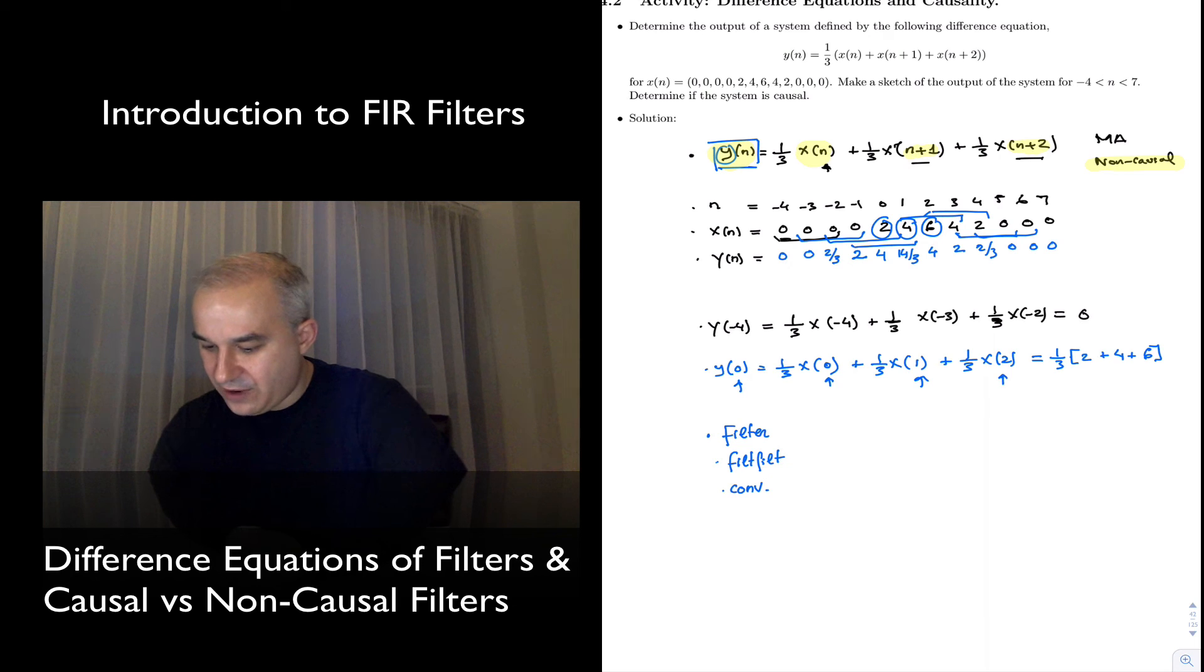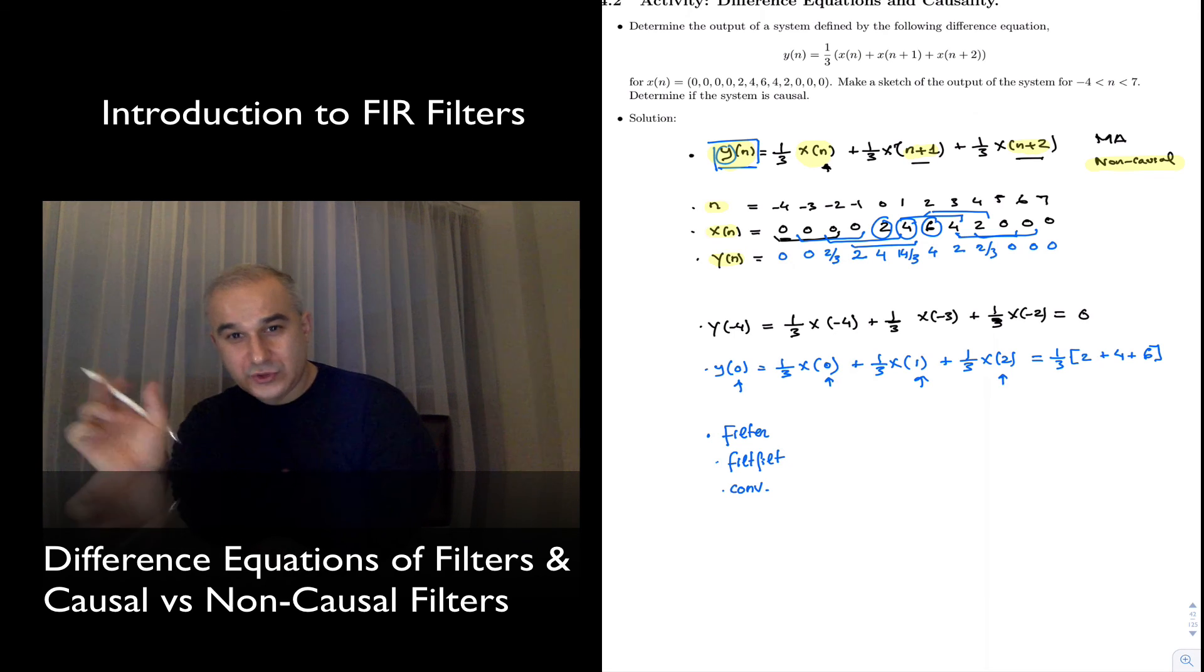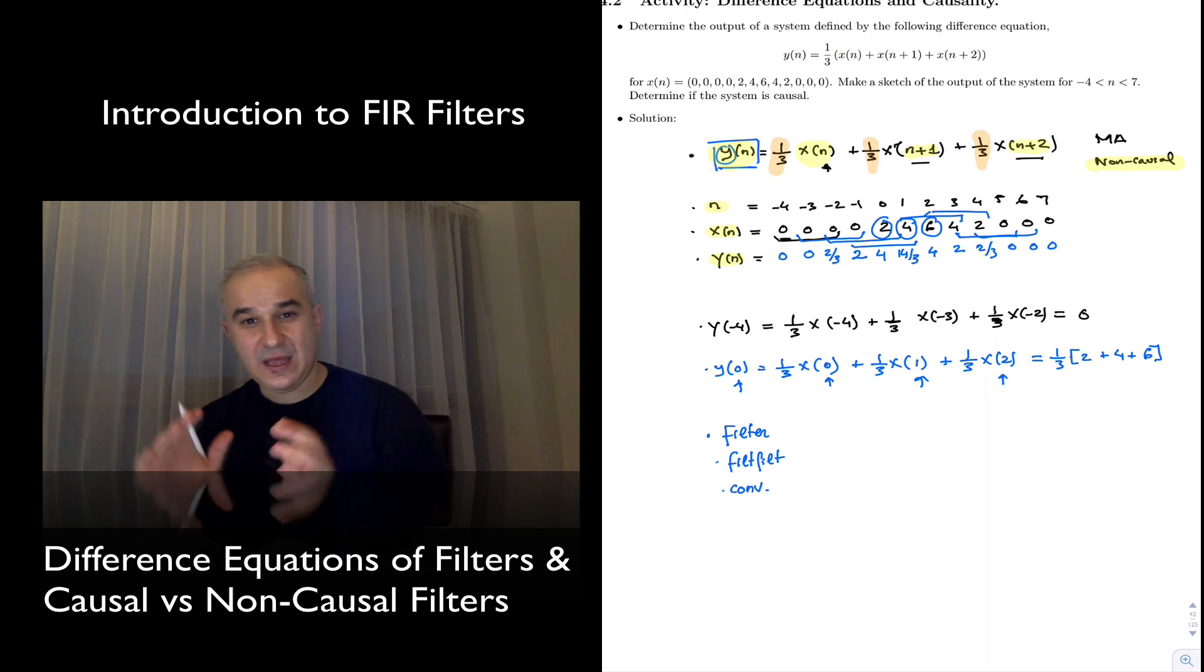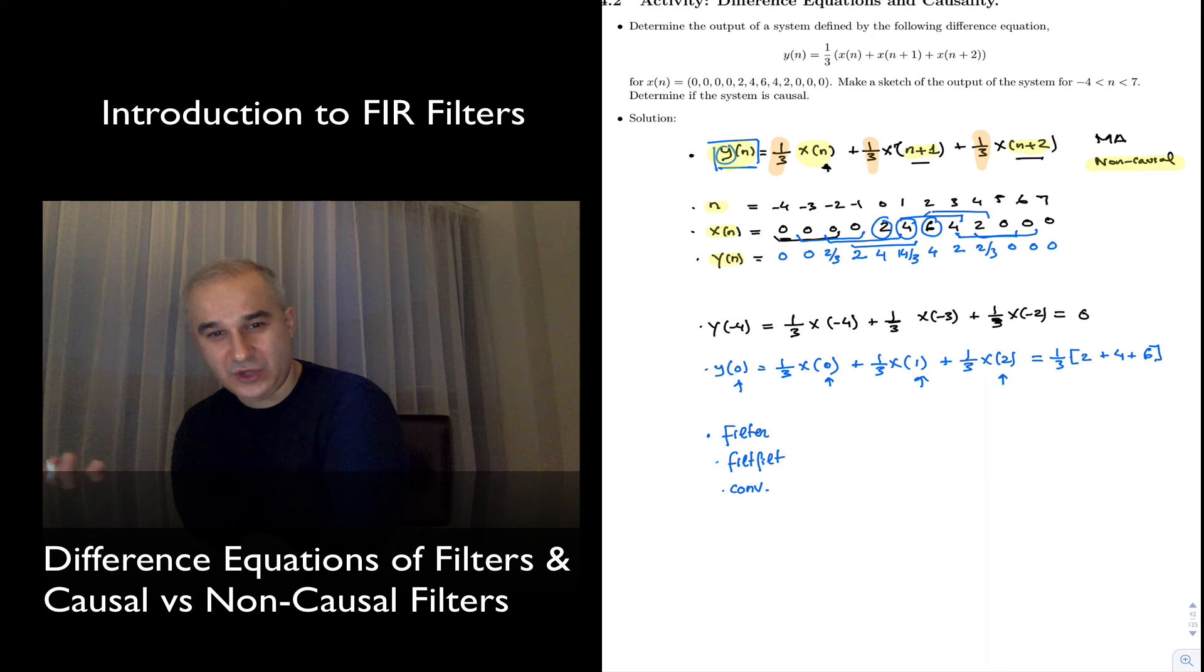Now, for a given input with a particular order, we are able to calculate the output. These are going to be moving windows where we apply those coefficients. In this case, a moving average, but we could have any other coefficients in the case of an FIR filter. This could be different. It is just a multiply-accumulate operation.